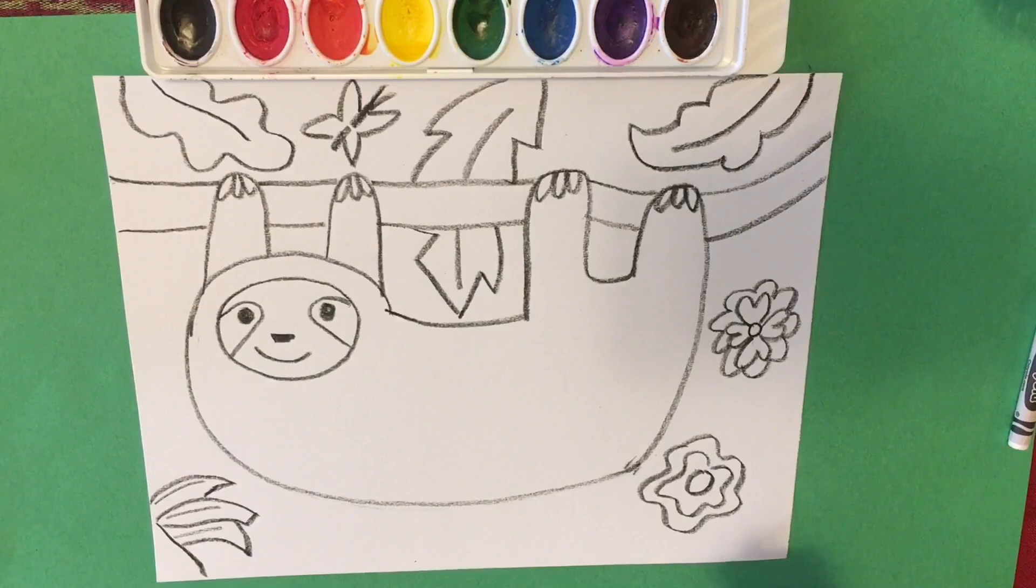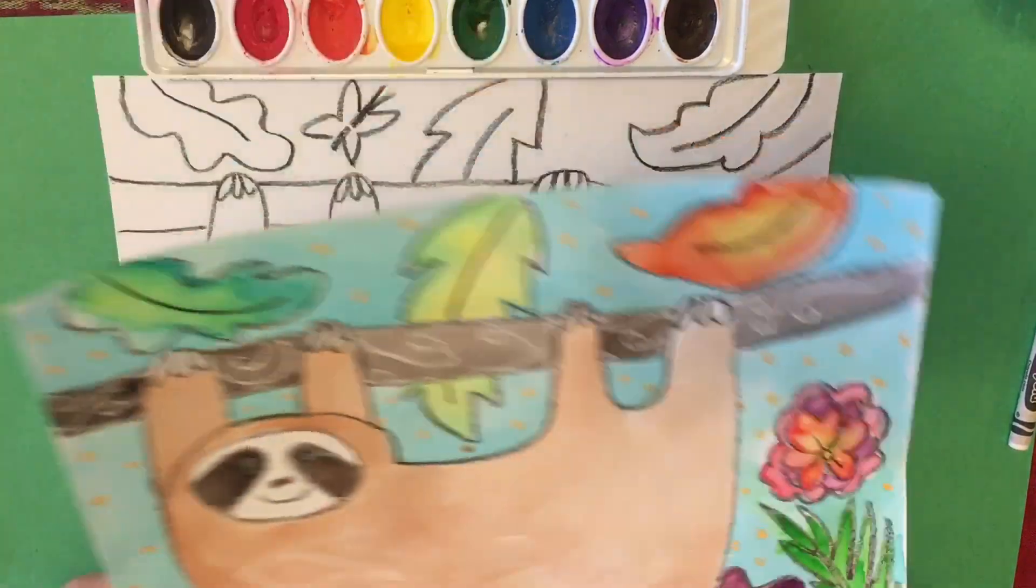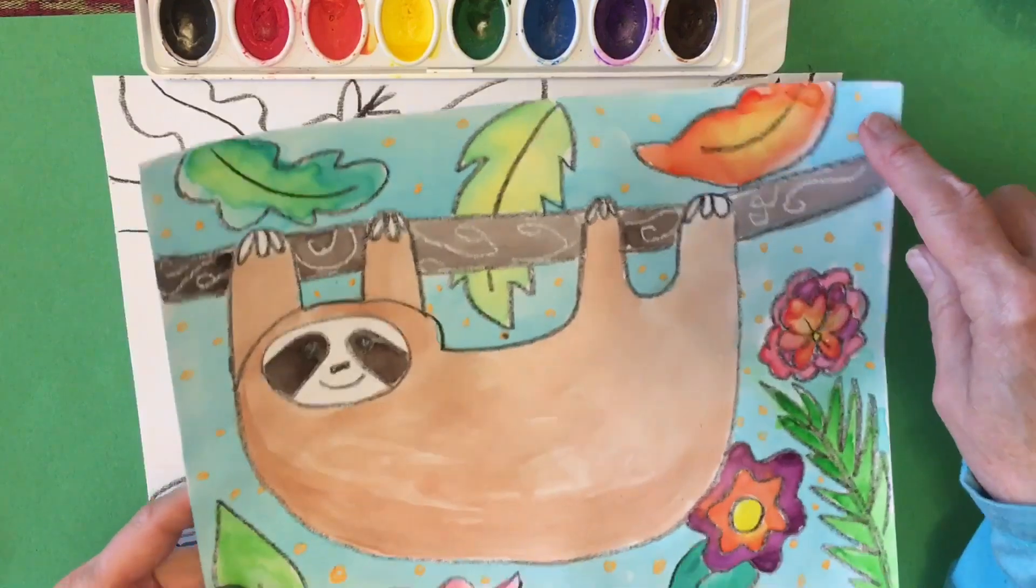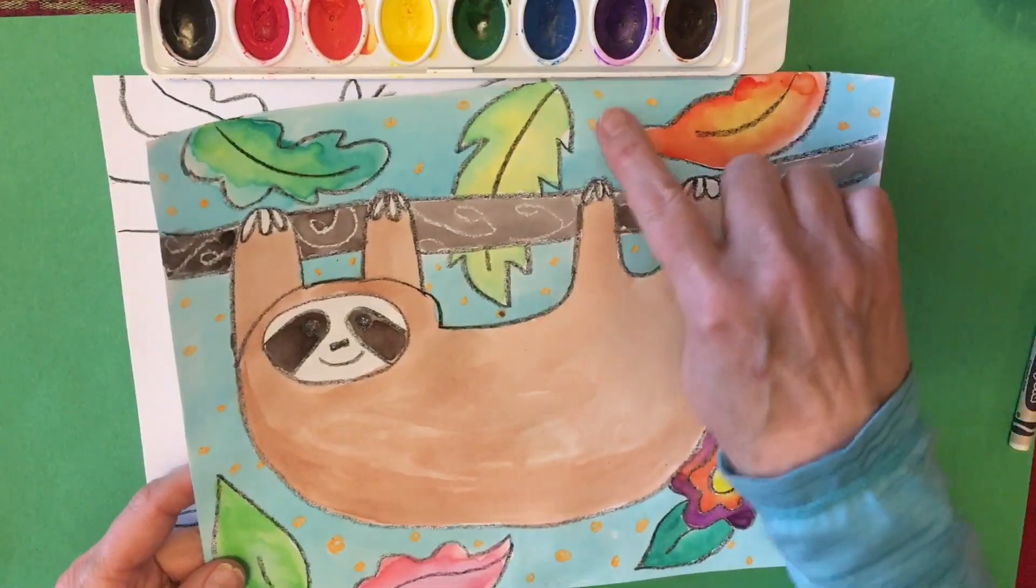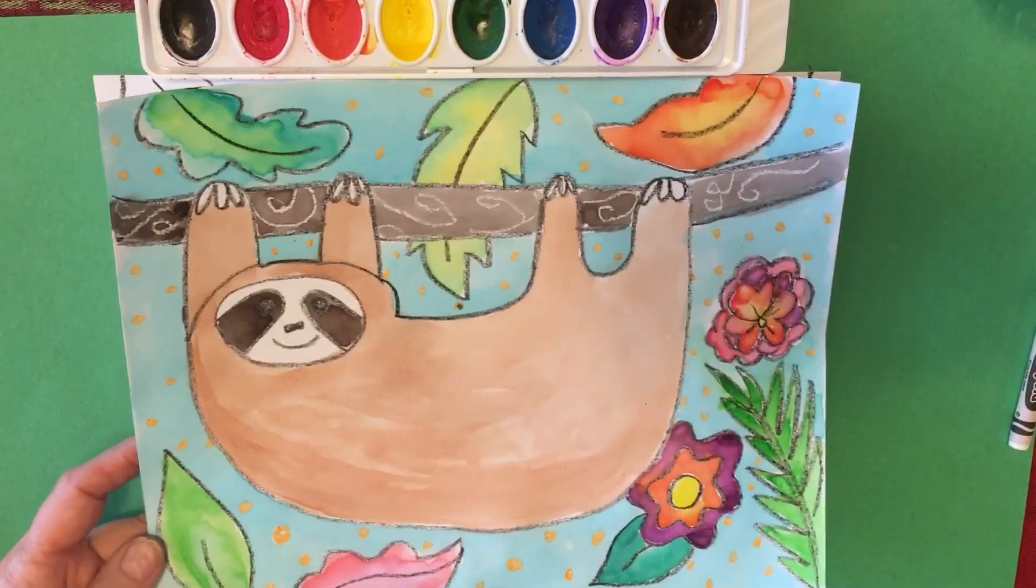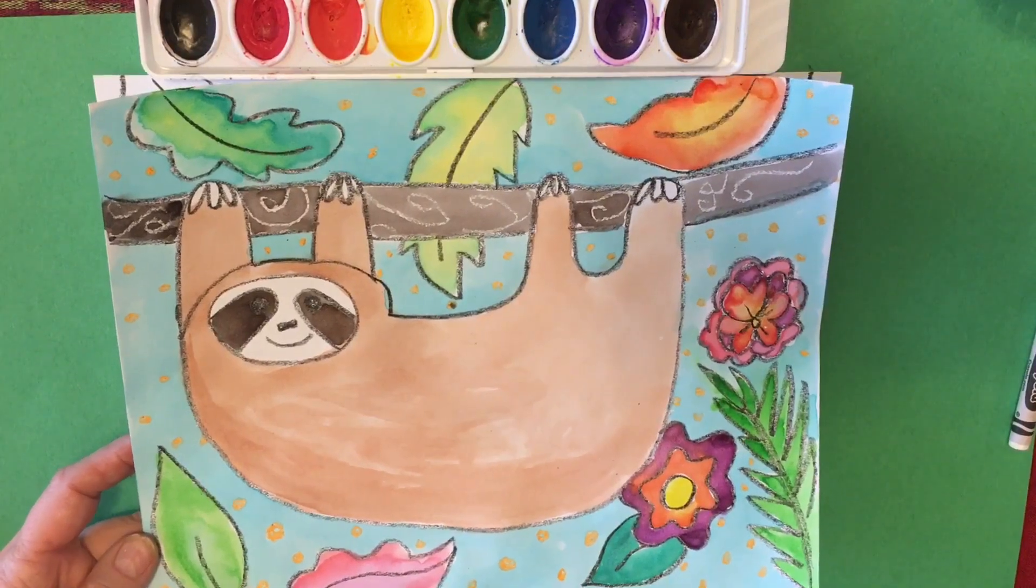Alright. And it's time to start with our color. Now I used watercolor on this. And you can see that I actually did some orange dots on the background before I paint it. But some of you do not have watercolors. I'm going to show you how to watercolor first. And then I want to show you how to do it with markers.